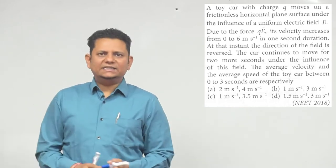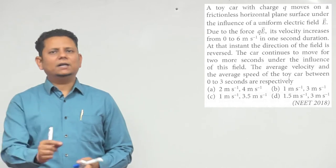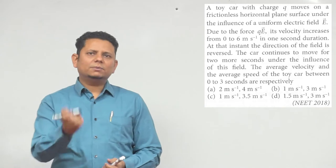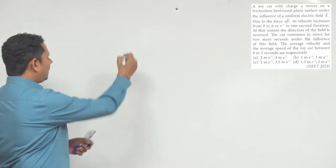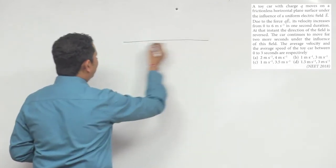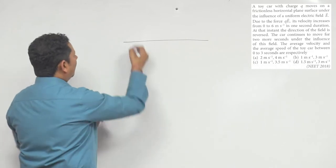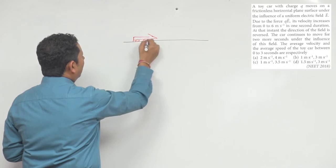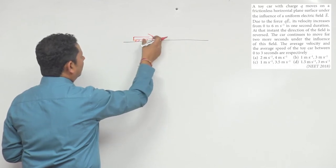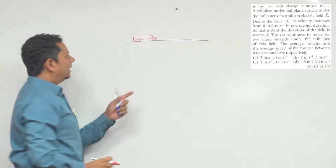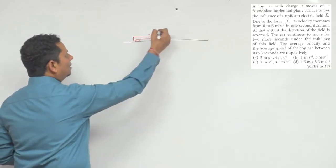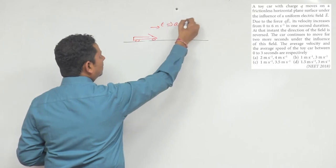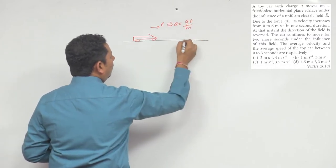Now again, basics - electrostatics and kinematics are both in this question. First, we will work on the situation. The situation is that you have a straight road. Let's say this is a car. This car is moving on the way. Electric field is there, which implies acceleration which is qE by m.